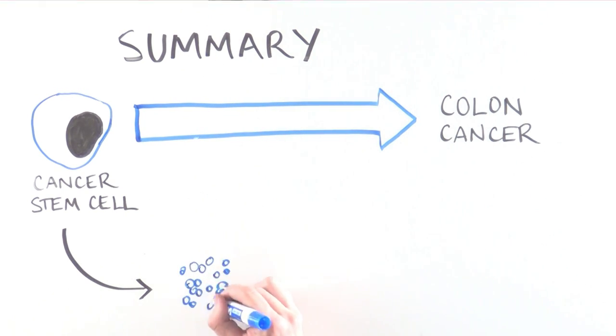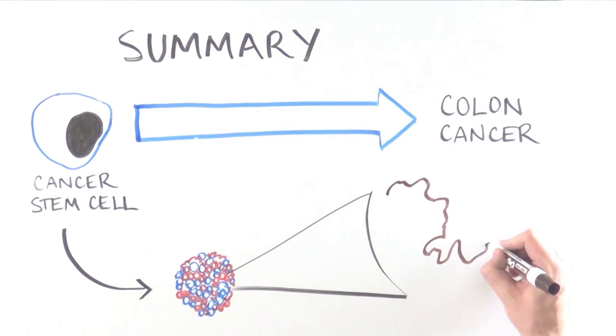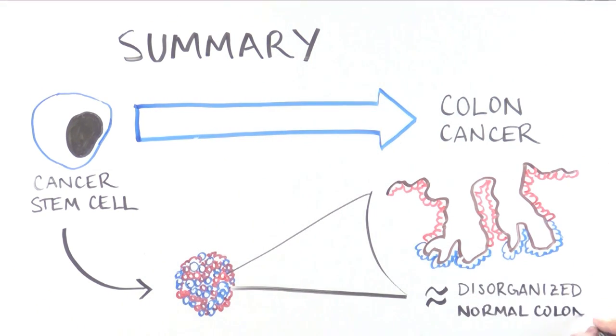When we isolate these human cancer stem cells, they can produce tumors in mice that look just like the tumor the cells came from, and looks a little bit like a disorganized normal colon.